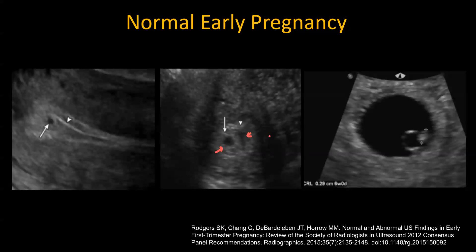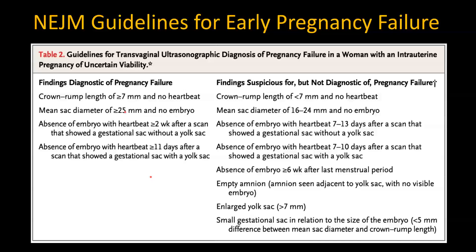In clinical practice, these signs are not usually that useful. The common normal pregnancy that you're going to see is going to be a small fetal pole, a yolk sac, and a normal size gestational sac. That's going to be the normal pregnancy for you in most cases.